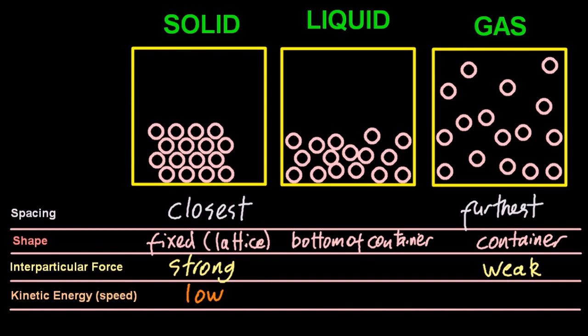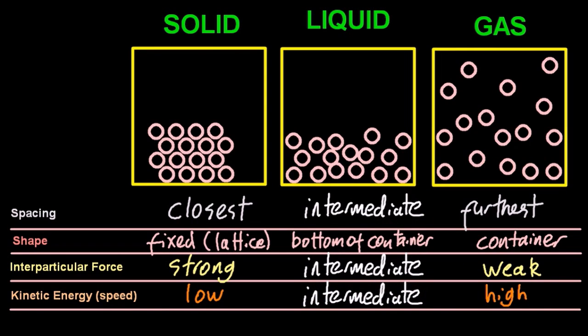Kinetic energy. That's another word we can use for speed. So gas has the highest speed there. That makes sense as well. And liquid, well that's kind of intermediate, where I've left those gaps between those properties.